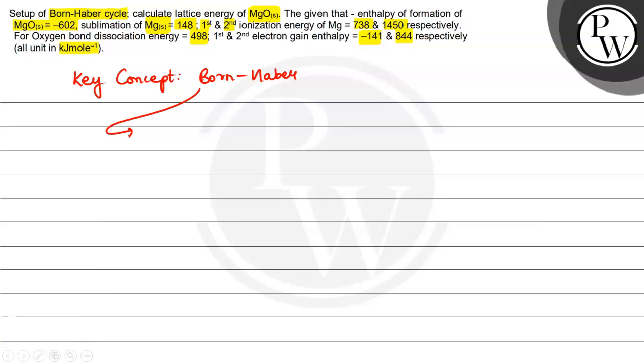So we know the reaction will be Mg solid plus half O2 will form MgO solid. Now we know this is the enthalpy of the reaction that will take place.